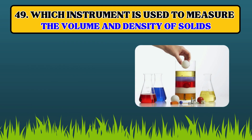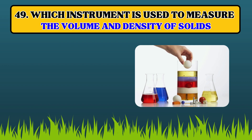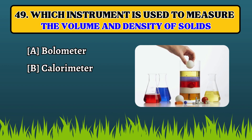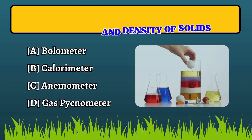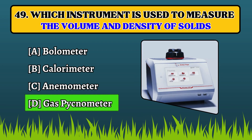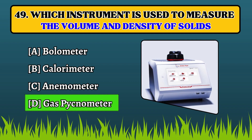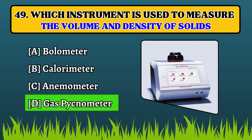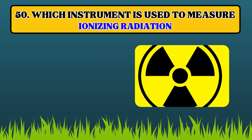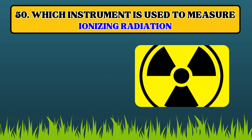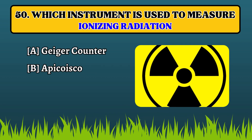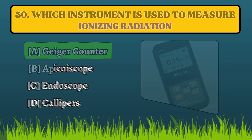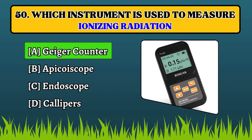Which instrument is used to measure the volume and density of solids? Pycnometer. Which instrument is used to measure the amount of radiation? Geiger counter.